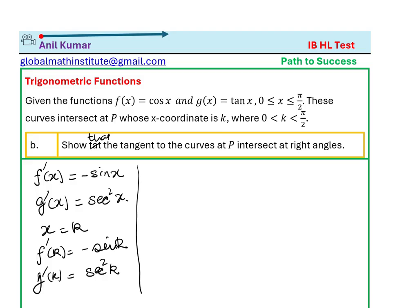Now if these are intersecting at right angles, the slopes are negative, so the product of both should be equal to -1. So let's do that. We have -sin k times sec²k that should equal -1. This is what we have to show. Only then they intersect at right angles, so let's prove this.